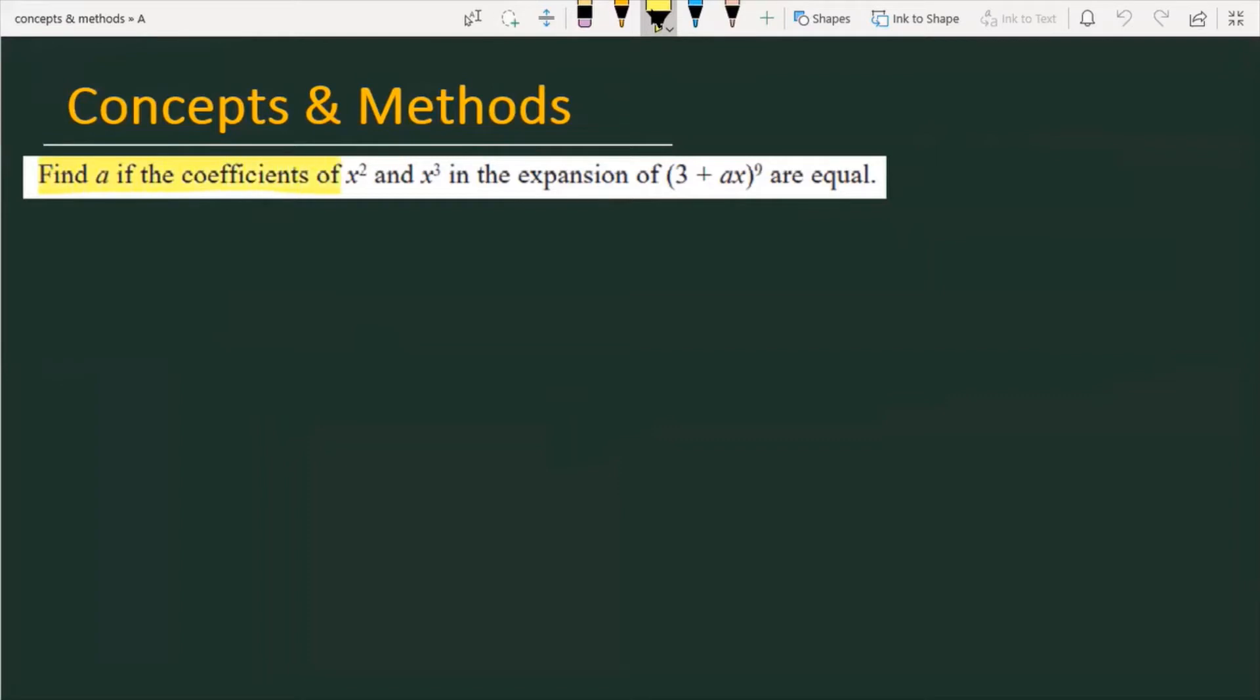Find a if the coefficient of x² and x³ in the expansion of (3 + ax)⁹ are equal. So let's see how we will solve this problem. The question asks you to expand (3 + ax)⁹ and equate the coefficients of x² and x³, then find the value of a.